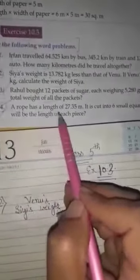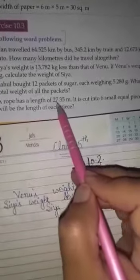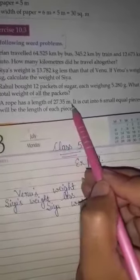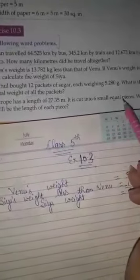The next fourth word problem is: a rope has a length of 27.35 meters. It is cut into six small equal pieces. What will be the length of each piece?